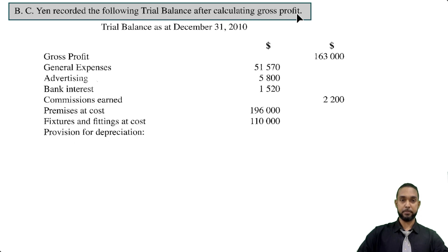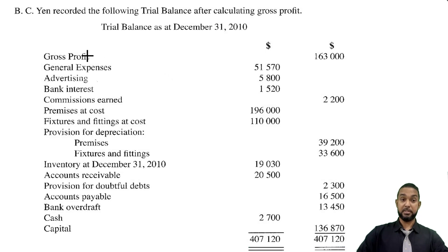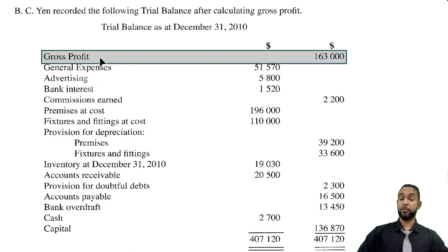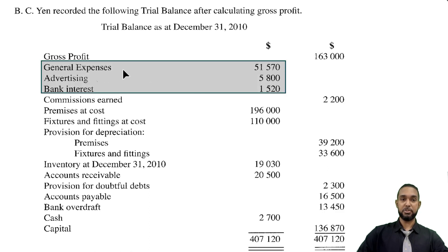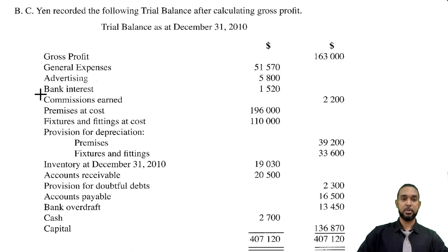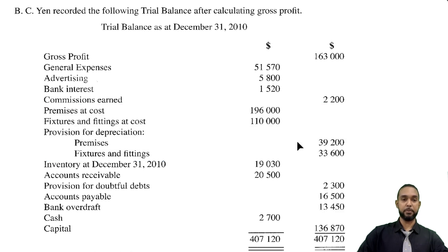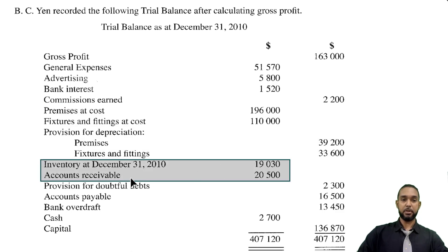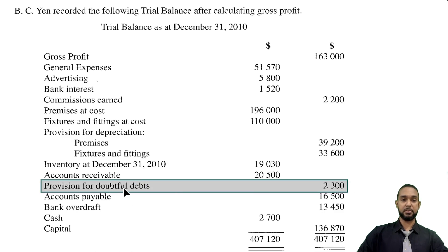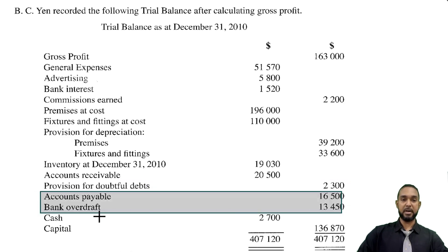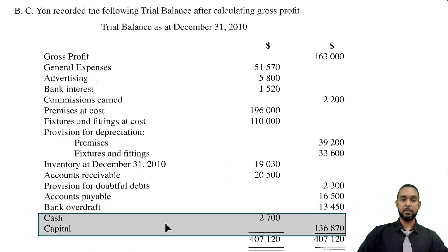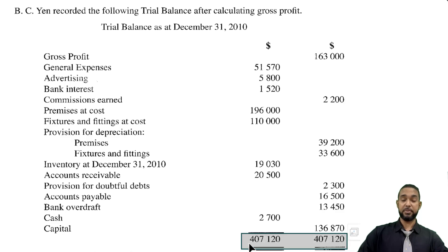They are telling us that BCN recorded the following trial balance after calculating gross profit. So we are given this full trial balance, and the gross profit is included because we've already calculated gross profit. We have a few expenses: general expenses, advertising, bank interest. We also have commissions earned, which is a revenue, hence it's in the credit column. We have information about non-current assets — premises at cost, fixtures and fittings at cost, and the associated provisions for depreciation. We also have closing stock, accounts receivable, a provision for doubtful debts, accounts payable, bank overdraft — those are current liabilities — and we have cash and capital. The sum of the debit column equals the sum of the credit column, so our trial balance agrees.